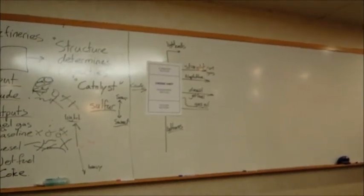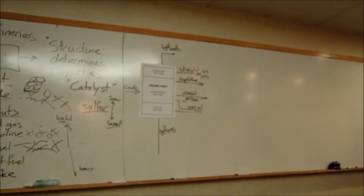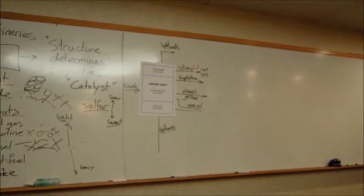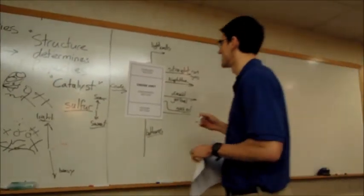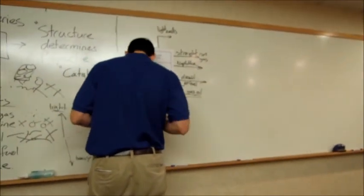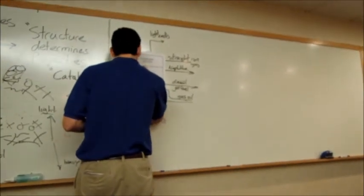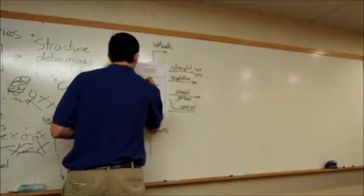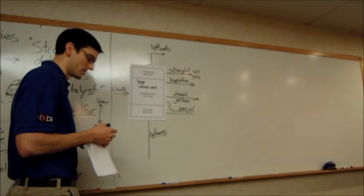So it organizes according to what the structure is. So there's three sections. There's the stabilizer section, the atmospheric section, and the vacuum section. Temperature, that's basically what it uses to separate things.